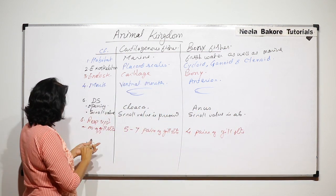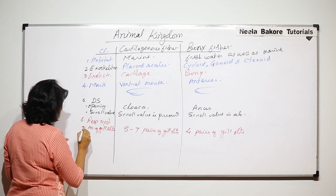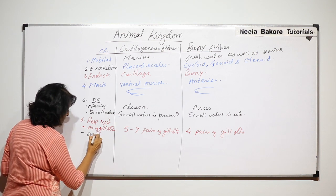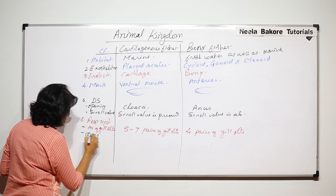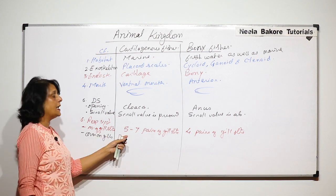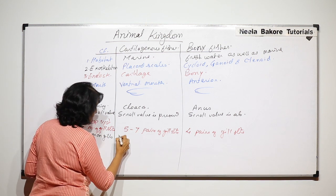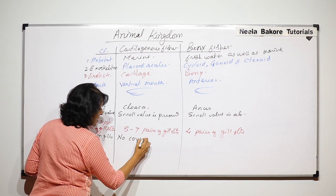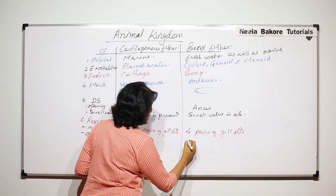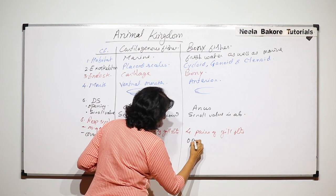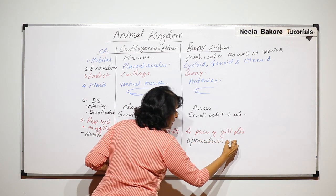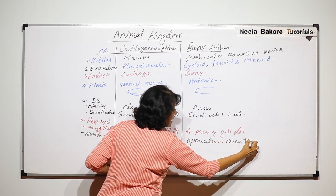The second point in respiration is whether the gills are covered or not. In cartilaginous fishes there is no cover on the gill slits, whereas in bony fishes an operculum covers the gill slits.